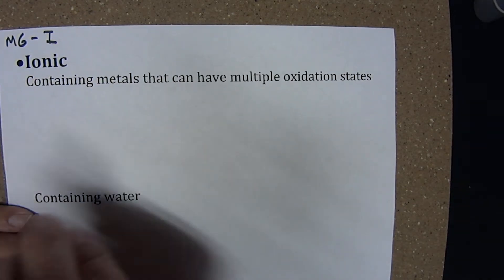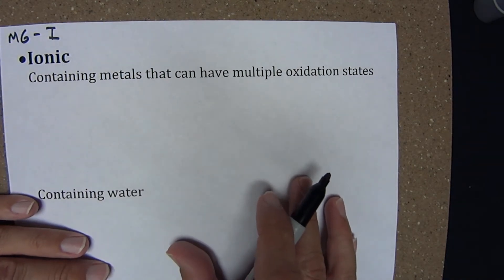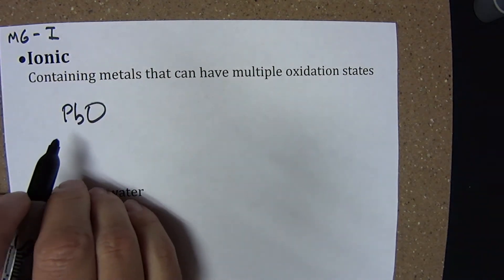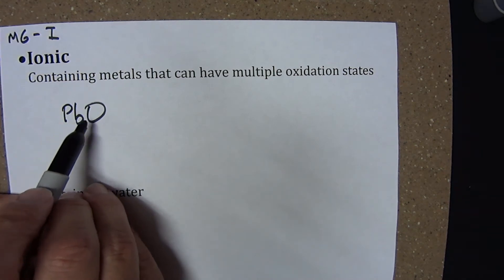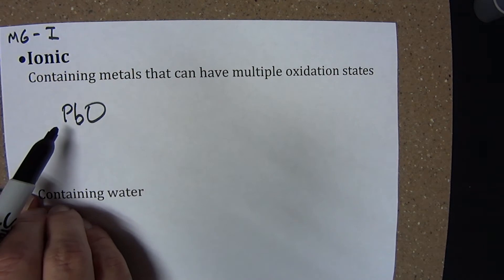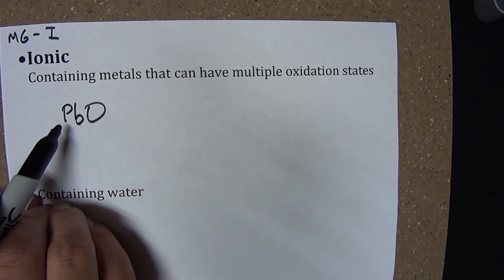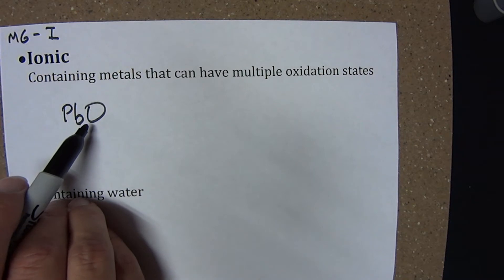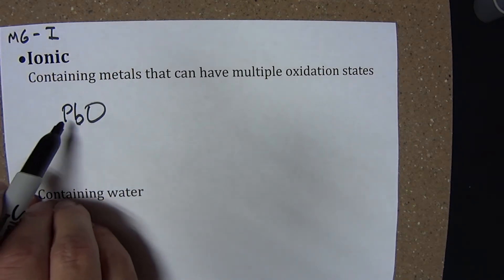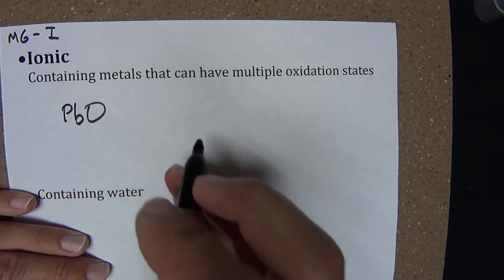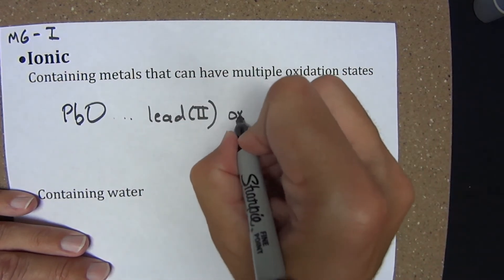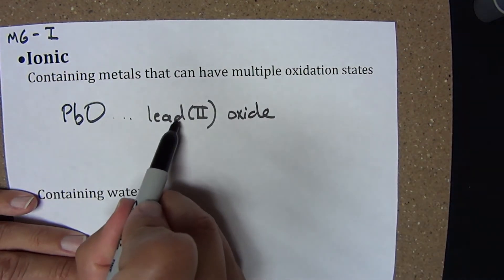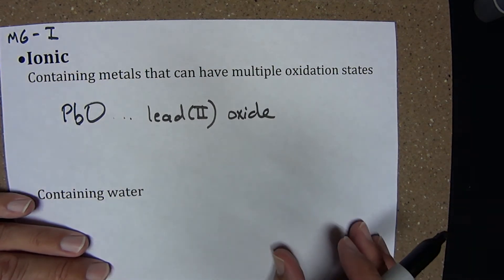Within the name, to specify the oxidation state, I'll use Roman numerals. Here's a common example: a binary ionic compound of lead and oxygen. But lead can have more than one oxidation state. I know the oxidation state for lead here because oxygen, being a group 6A element, as an anion is going to be −2. If these exist in a 1-to-1 ratio, the lead must have been +2. My name will reflect that — I write this as lead(II) oxide. No space between the 'd' and the first parenthesis: lead(II) oxide.